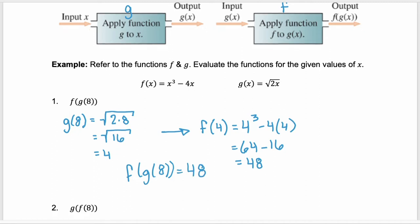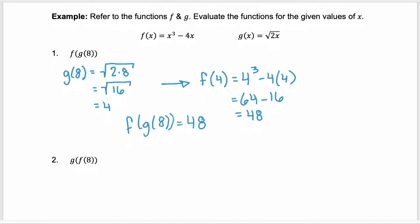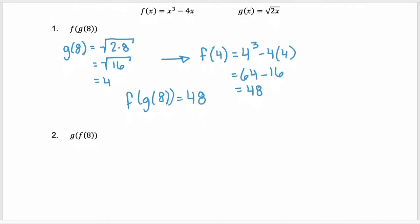Now order matters. Let's look at what happens when we find g of f of eight. So start with the innermost function f of eight. So you're starting with the function f, substituting in the eight, eight cubed minus four times eight. Eight cubed is 512 minus 32. That would be 480.